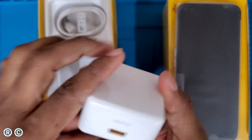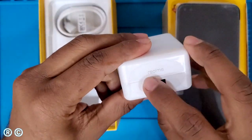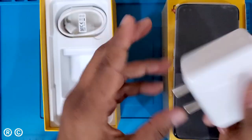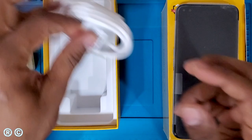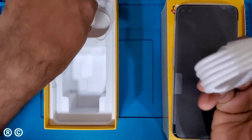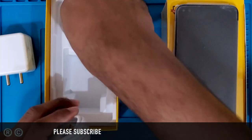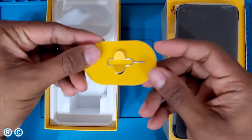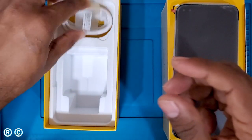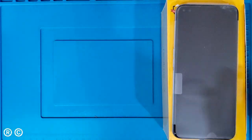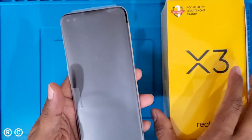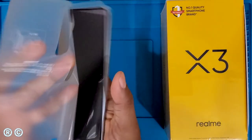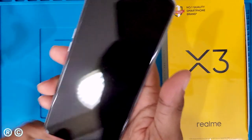In the box we have a Realme charger - this is a 30 watt charger with Realme branding and specifications. It's a white color charger. We also get a Type-C cable and a SIM ejector tool.